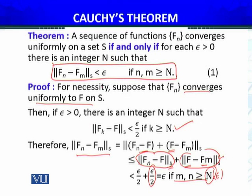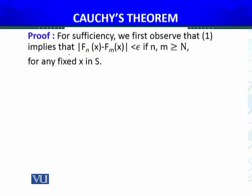अब sufficient condition को proof करते हैं। Sufficient condition यह है: we suppose the inequality — the Cauchy condition — and then we will show that f_n converges uniformly on S। For sufficiency, we first observe that the Cauchy condition implies |f_n(x) − f_m(x)| less than epsilon if n, m ≥ N, for any fixed x। यहाँ fixed x क्यों कर रहे हैं — क्योंकि x fixed करने पर f_n(x) एक sequence of real numbers बन जाती है।